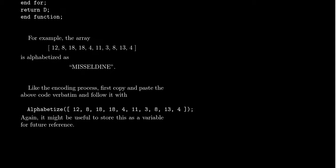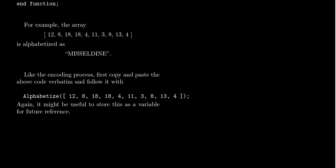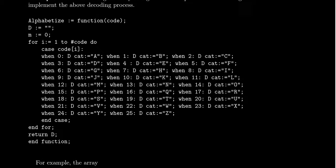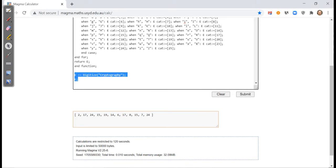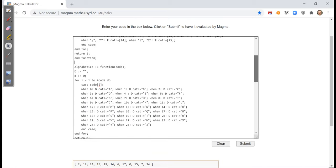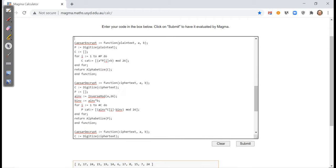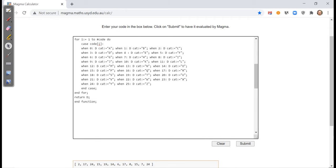If we put this into practice, perhaps we take this array of numbers: 12, 8, 18, 18, 4, 11, 3, 8, 13, 4. Then alphabetize will report the string Misseldein. Make sure you also put the code into MAGMA. You have to copy and paste this code. Let me go back over to MAGMA. By liberty, I left the code here already. The code for alphabetize is already copied and pasted right here. Let's run it.